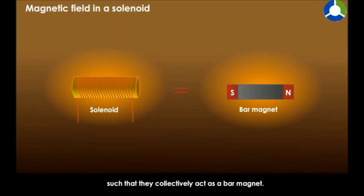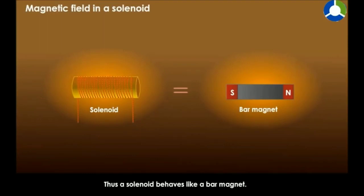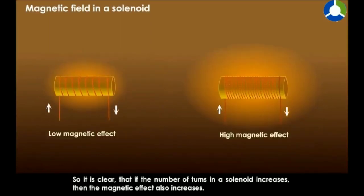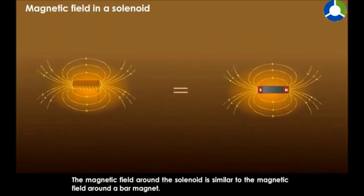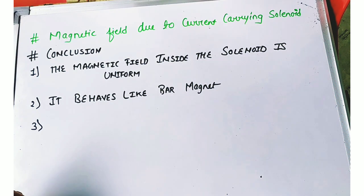Near the poles, the magnetic field intensity will be maximum, and at the corners or center the field lines will be minimum. If we increase the number of turns, the magnetic field will also increase. If we reduce the number of turns, the magnetic field will be lower. The purpose of making a solenoid is that we can increase or decrease the intensity of the magnetic field as needed.